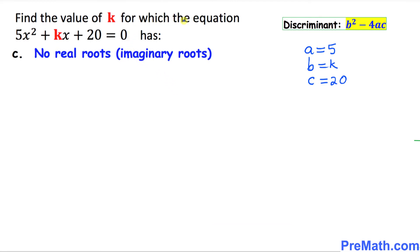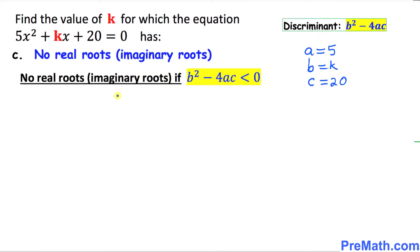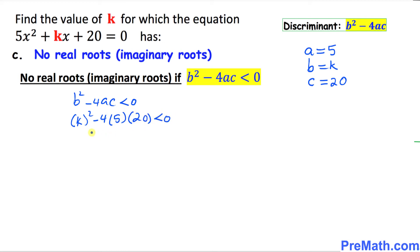In the next part, we are going to find the value of k if this quadratic equation has no real roots. No real roots means it has imaginary or complex roots. In this case, the discriminant b squared minus 4ac must be less than 0. Filling in the values: k squared minus 4 times 5 times 20 is less than 0, which simplifies to k squared minus 400 is less than 0.